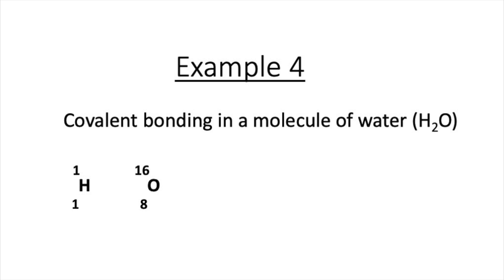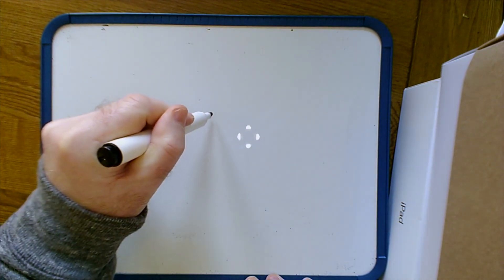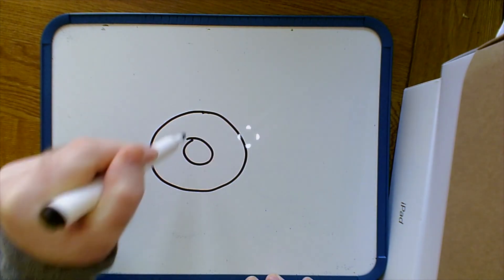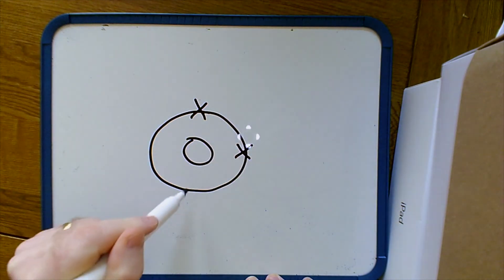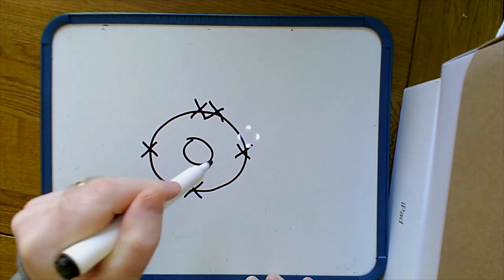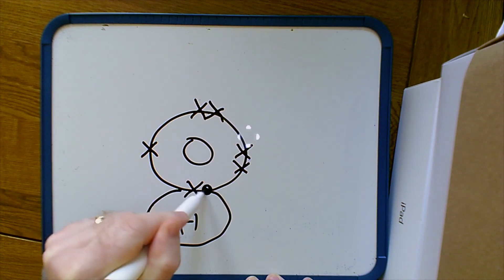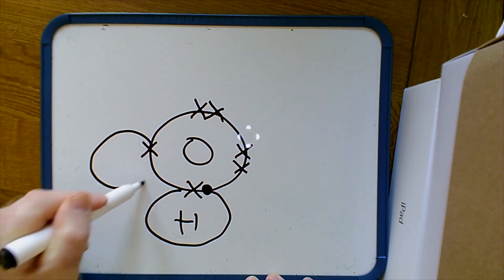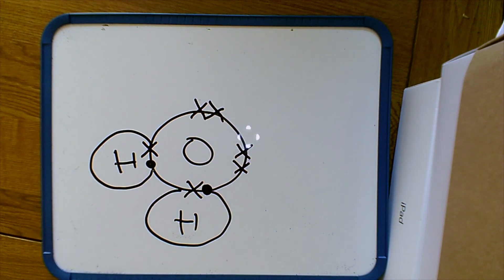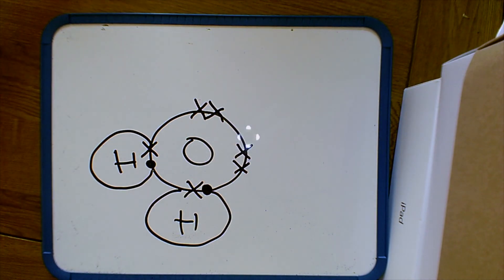In example 4 we look at the covalent bonding in water, H2O. Water is made up of hydrogen, atomic number 1 with one electron in the outer shell, and oxygen, atomic number 8 with electron arrangement 2,6. To draw the diagram I first draw the central atom, oxygen, and put the six outer electrons in at 12, 3, 6, 9, 12, and 3 o'clock, leaving two unpaired electrons. I pair those up with the hydrogen atoms, and both hydrogen and oxygen now have a full outer shell of electrons.